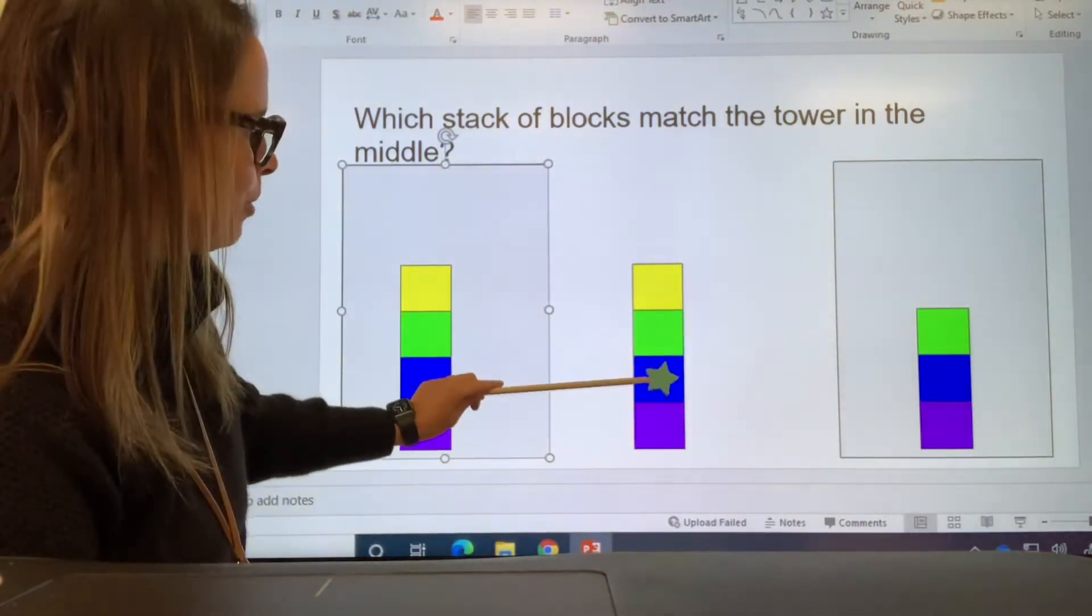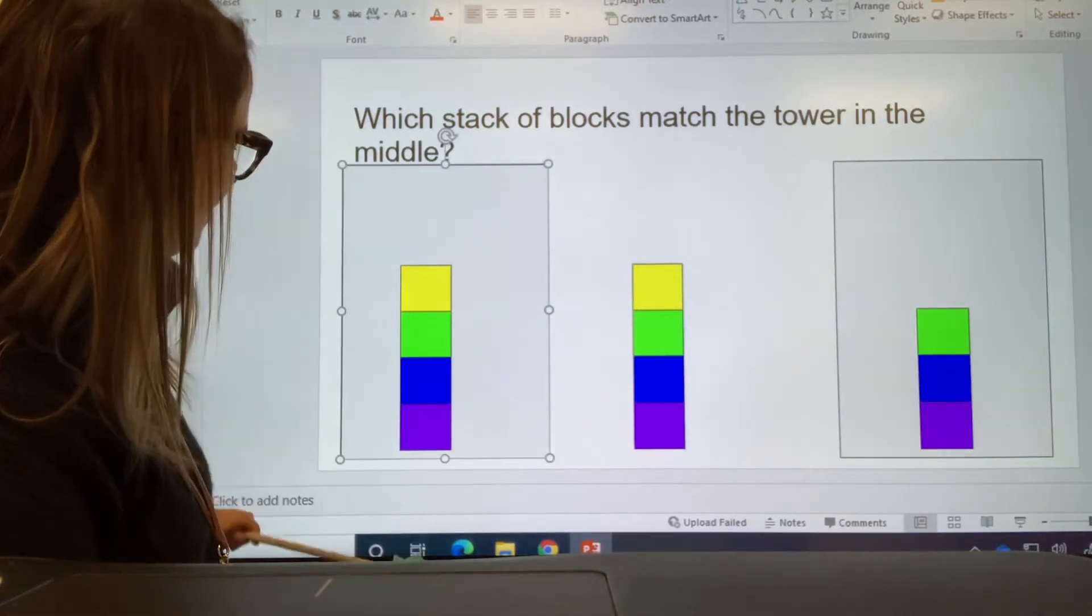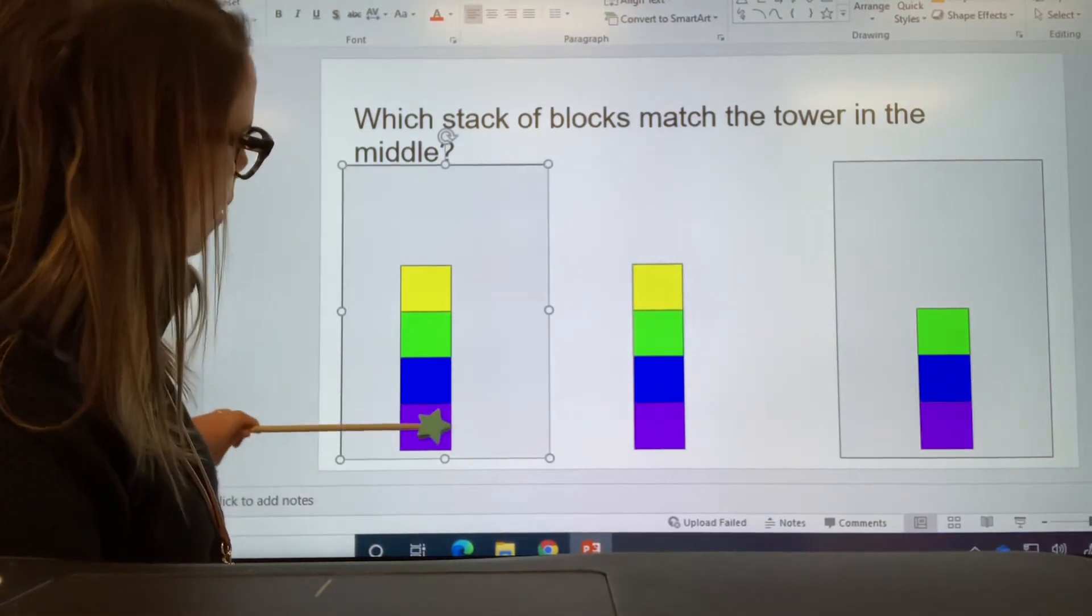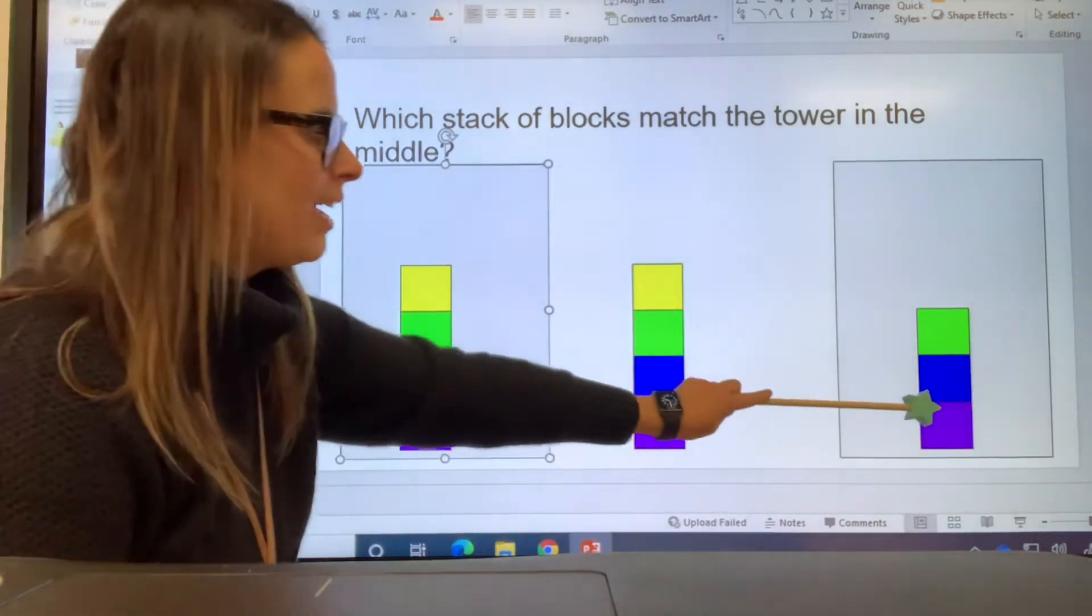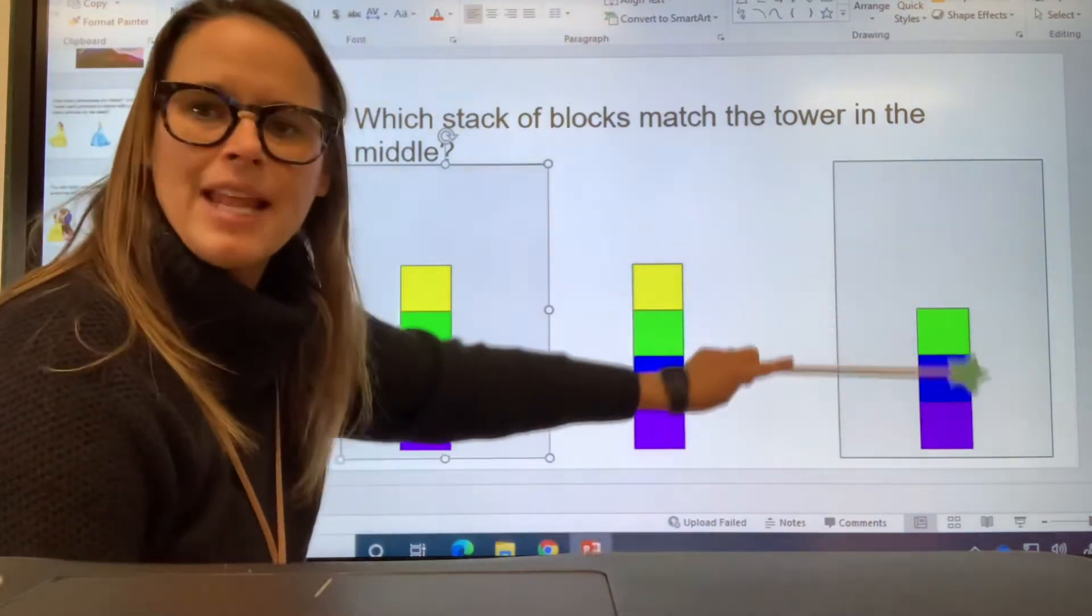Yellow, green, blue, purple. Yellow, green, blue, purple. One, two, three, four. One, two, three, four. They're the same. They match. This one has one, two, three. This one has less blocks.